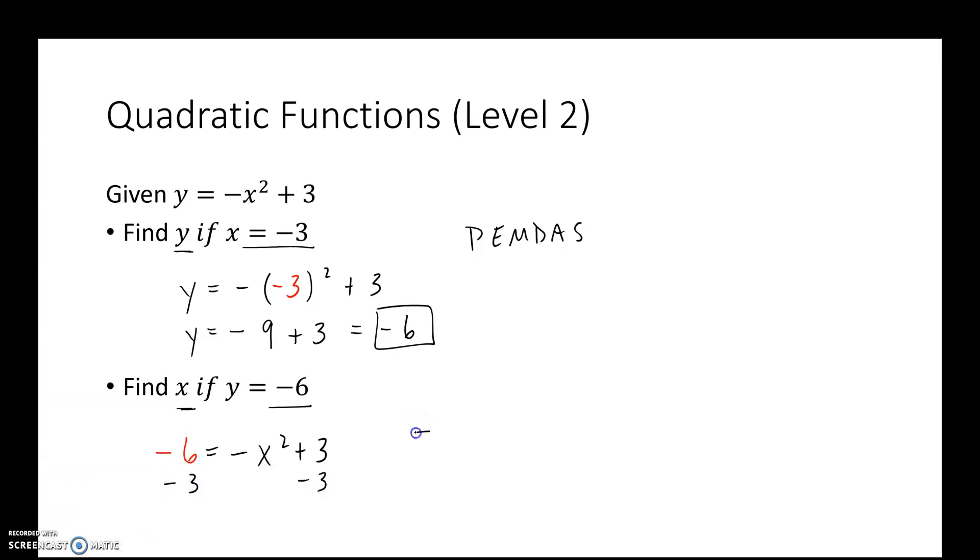So I'm going to subtract 3 from both sides. So I get negative 9 is equal to negative x squared. I have to get rid of that multiply by negative 1. So I'm going to divide both sides by negative 1. I get 9 is equal to x squared. Next, I take the square root of both sides. And remember, when you take the square root, two answers exist. So x could be positive 3 or negative 3. And I think the directions say separate answers with a comma. So be careful. Both answers have to be inputted for full credit.